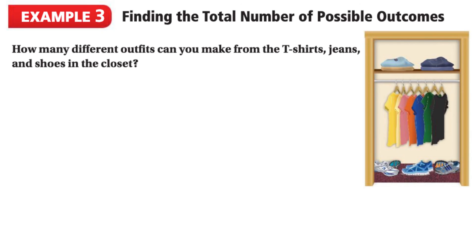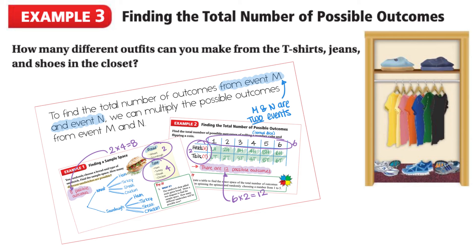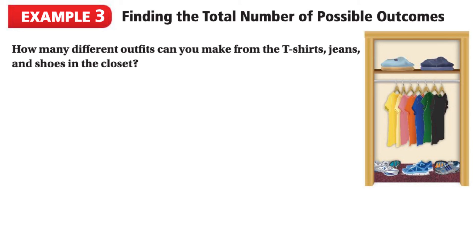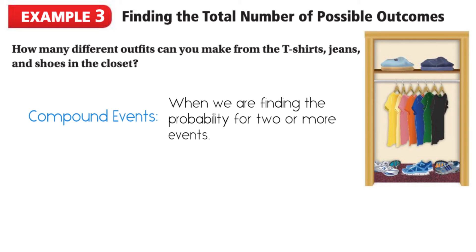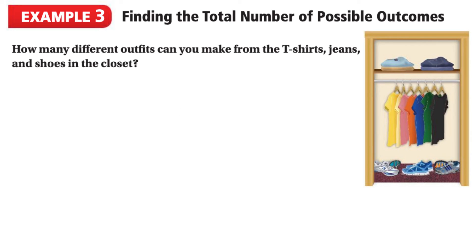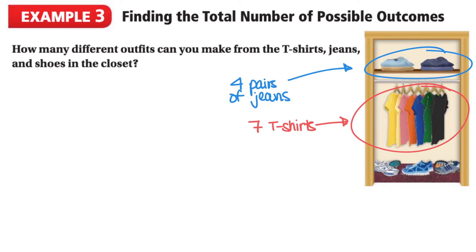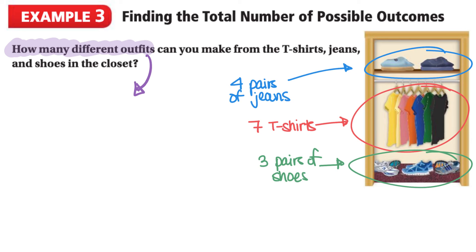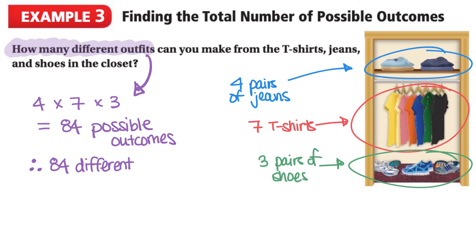In our third example, let's use that quick method to determine the total number of possible outcomes. The question asks: how many different outfits can you make from the t-shirts, jeans, and shoes in the closet? Since we're looking at three different items, we have three events. In the closet, there are four different jeans, seven different t-shirts, and three different pairs of shoes. We multiply: four times seven times three equals 84 possible outcomes, and therefore there are 84 different outfits.